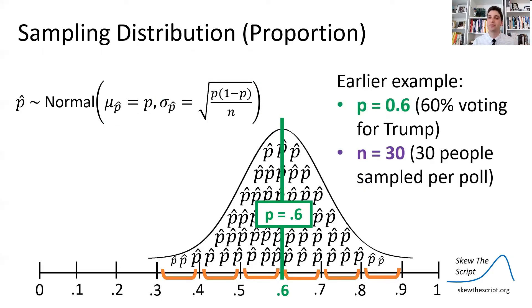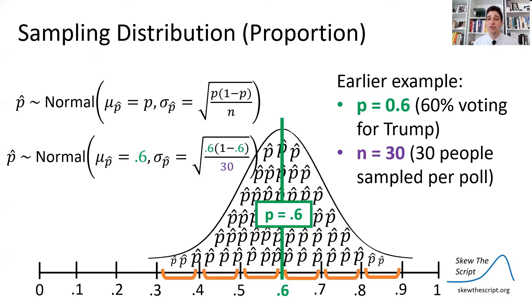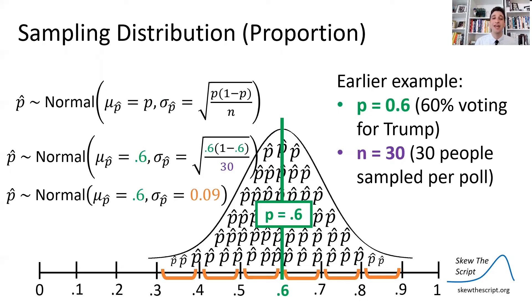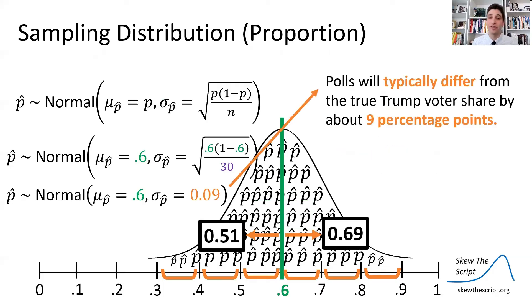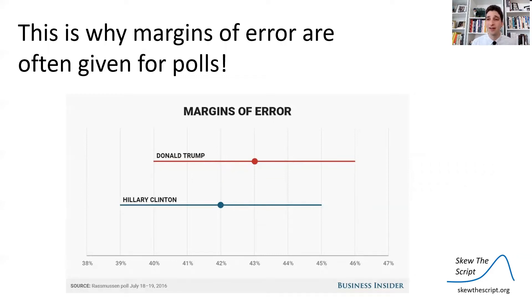Let's calculate it in our example where 60% are voting for Trump and we're polling 30 people at a time. We plug in 60% for the true proportion and 30 for the sample size. If you do the math, you get a standard deviation of 0.09. So polls will typically differ from the true Trump voter share by nine percentage points up or down from that true central value of 60%. This is why polls are often given margins of error — we know that by chance alone we might over- or under-estimate, so we provide a margin of error around our estimate.